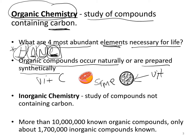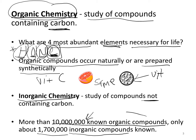Inorganic chemistry is the study of compounds that do not contain carbon. Comparing the two: there are more than 10,000 known organic compounds — a number constantly increasing as chemists synthesize new compounds and develop pharmaceuticals. Inorganic compounds number around 1.7 million versus 10 million organic compounds, so there are far more known organic compounds. This is due to the unique properties of carbon we'll study in this chapter.